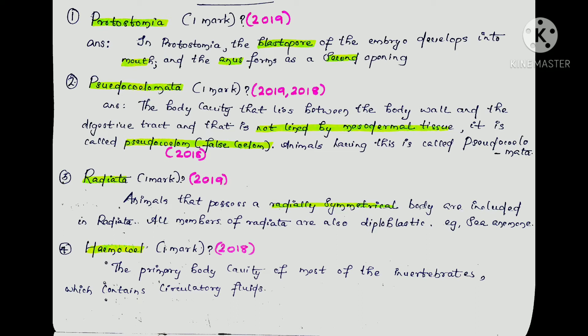That is Protostomy. The opposite of this is the Deuterostomy group. In Deuterostomy, the arrangement is reversed — we will learn about that separately.